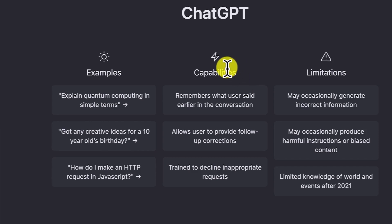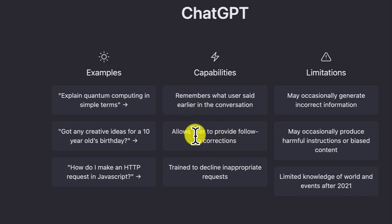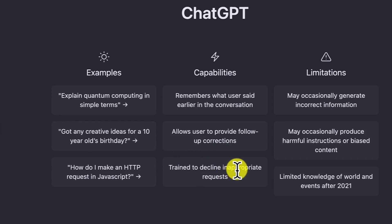ChatGPT can remember what users said earlier in the conversation, allow users to provide follow-up corrections, and reconnect with previous conversations. It is also trained to decline inappropriate requests. If you make any inappropriate request, this AI tool has been trained to decline it instantly.